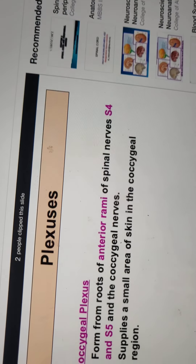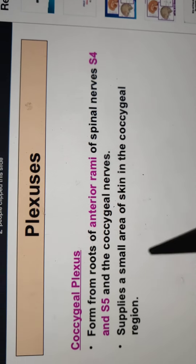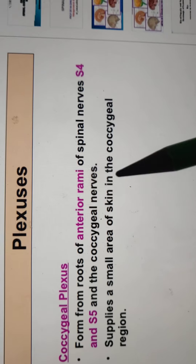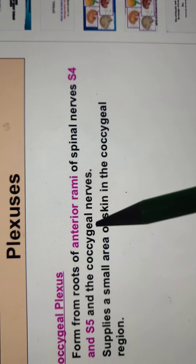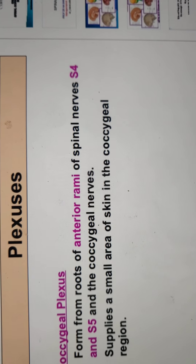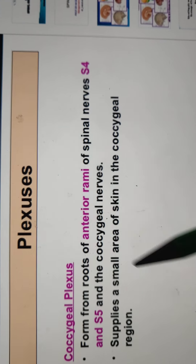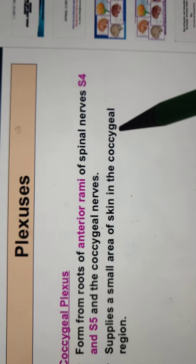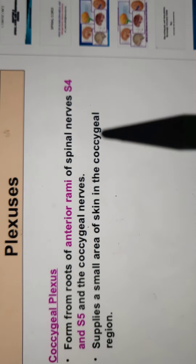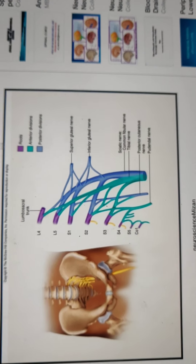The coccygeal plexus is formed by S4, S5, and the coccygeal nerves. It supplies small areas of skin present in the coccyx region.